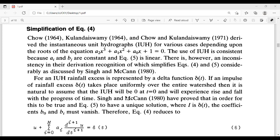Instantaneous unit hydrograph is consistent because ai and bj are constant in equation 5 is linear. There is, however, an inconsistency in their derivation, recognition of which simplifies equations 4 and 5 considerably as discussed by Sine and McCann. For an IUH rainfall excess is represented by delta function delta t. Sine and McCann have proved that in order for this to be true, equation 5 to have a unique solution where I is delta t, the coefficients b0 and b1 must vanish. Therefore, equation 4 reduces.